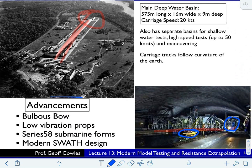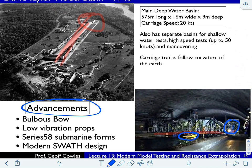A lot of advancements came out of this facility — DTMB, or Carderock as they call it now. Bulbous bow developments, low-vibration propellers, the Series 58 submarine hull form research was done there. And then the modern SWATH ships coming out of the Navy — a lot of cool stuff from this big facility.